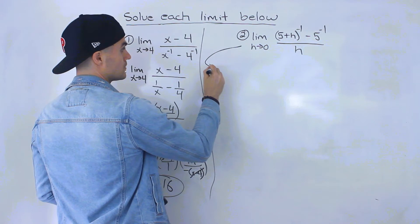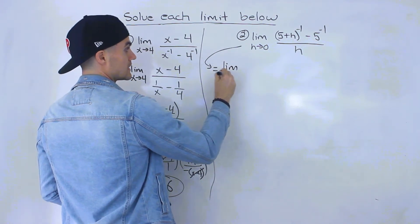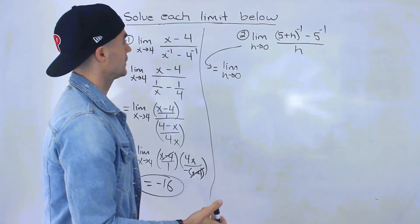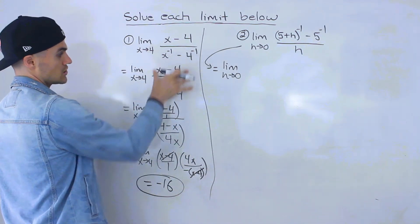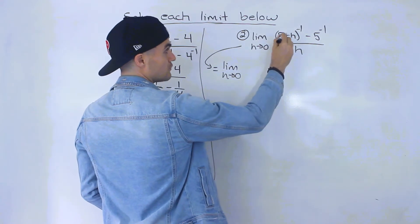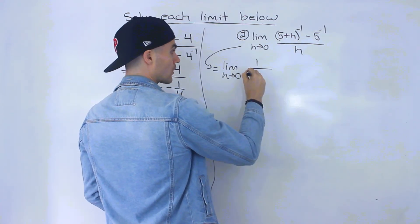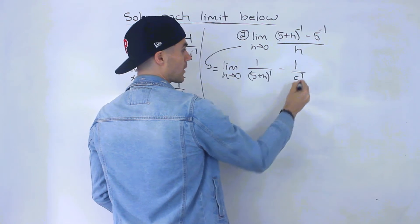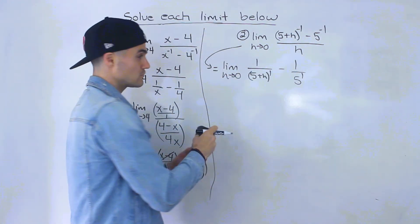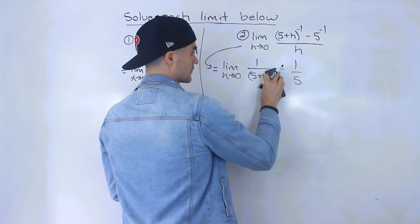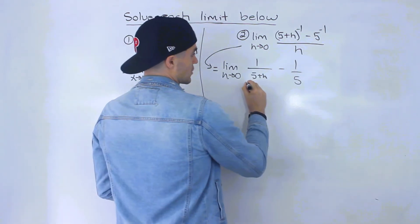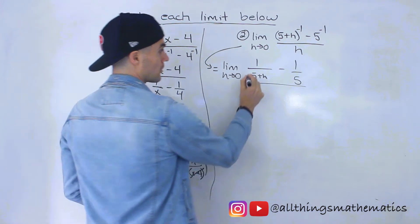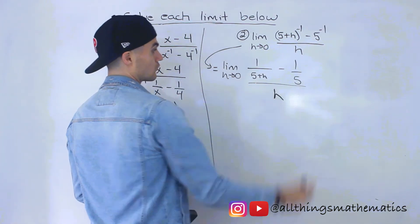For number two, we have the limit as h approaches 0. We can't plug in 0 for h because the denominator would be 0. Very similar to the previous problem, we need to convert the negative exponents. So 5 plus h to the power of negative 1 becomes 1 over 5 plus h, and 5 to the negative 1 becomes 1 over 5. Since they're each to the power of positive 1, we just write 5 plus h and 5. This is still all over h.